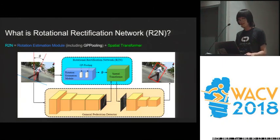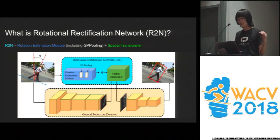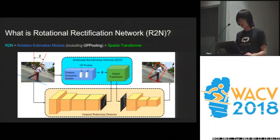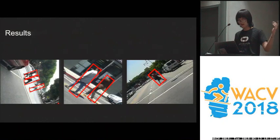In order to solve oriented pedestrian detection, we propose R2N, shown as the light blue box in the figure. R2N is composed of a rotation estimation module (the dark blue one) and a spatial transformer (the green one). The detector in the yellow box can be any general detection framework, such as Faster RCNN. The rotation estimation module includes GP pooling to accurately capture rotation in the inputs. It estimates the rotation and then passes it through the transformer to rectify the image features such that pedestrians are converted to upright, so the detector can easily detect angled pedestrians. Here are some example results — you can get much better bounding boxes.